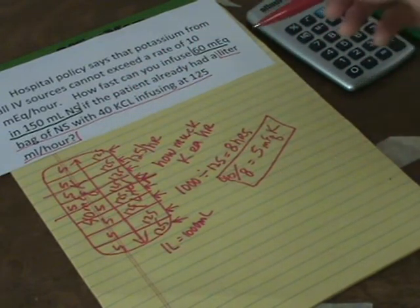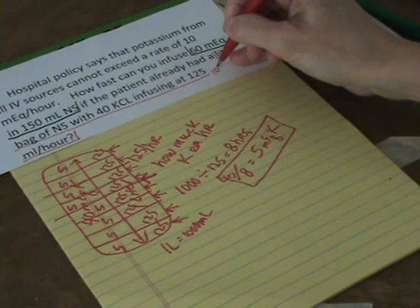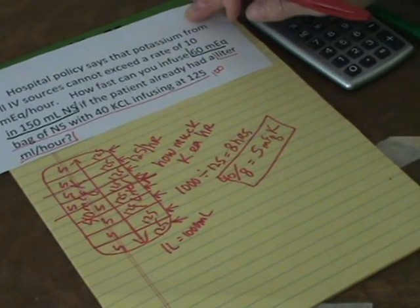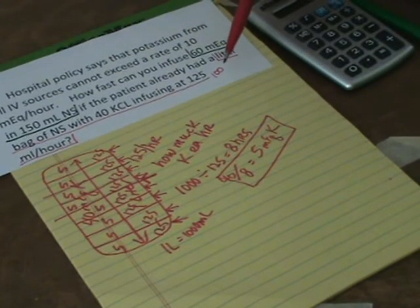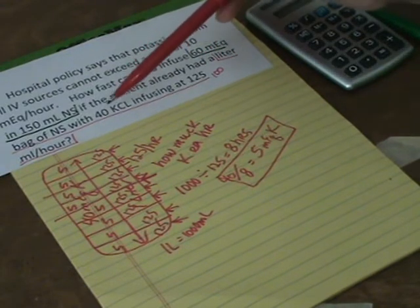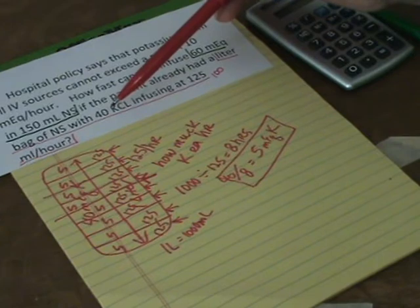What if the rate was, let me change the rate to 100, just for thinking purposes. Well, then the bag infuses in 10 hours. So in 10 hours they get 40. So they're getting 4 every hour.